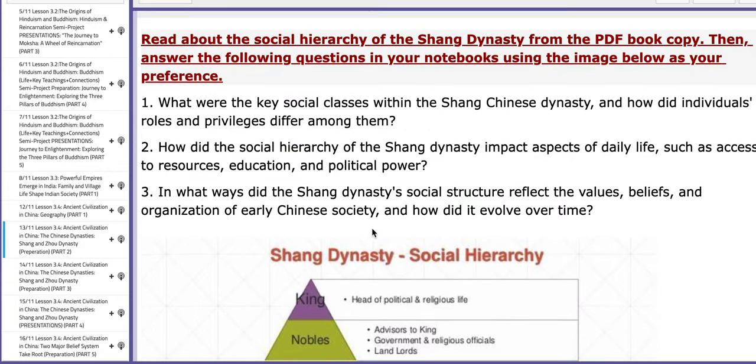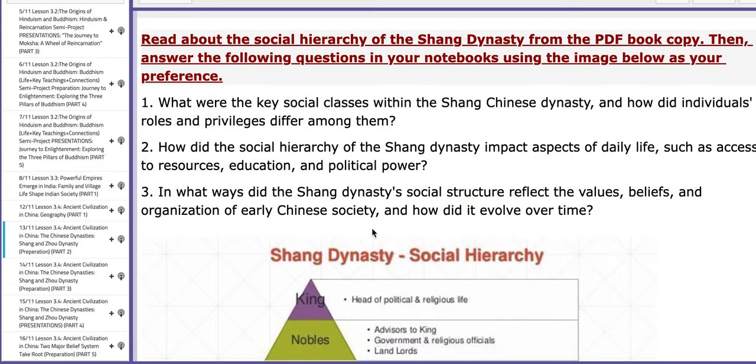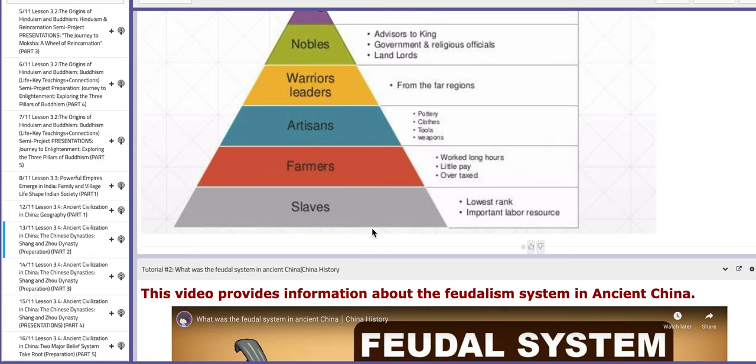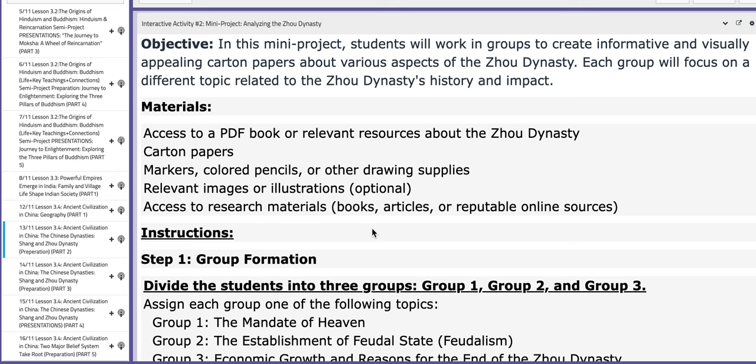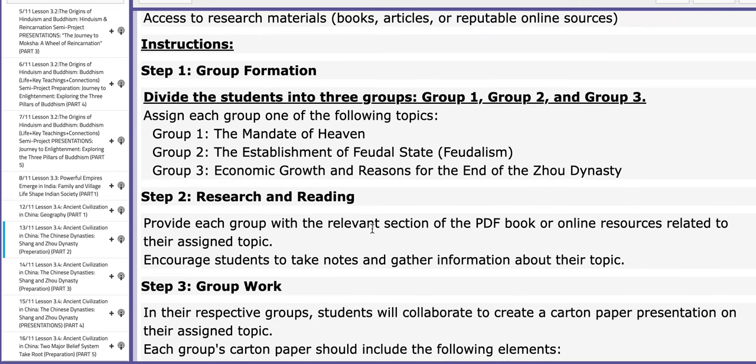In this interactive activity, we are going to explain the social hierarchy of the Shang dynasty. Then we will move on to the second interactive activity where you are going to be distributed into groups. Group one will discuss the Mandate of Heaven, group two will talk about the establishment of the feudal system, and group three will work on the economic growth and reasons for the end of the Zhou dynasty. This can be applied either in a PowerPoint or on carton paper.